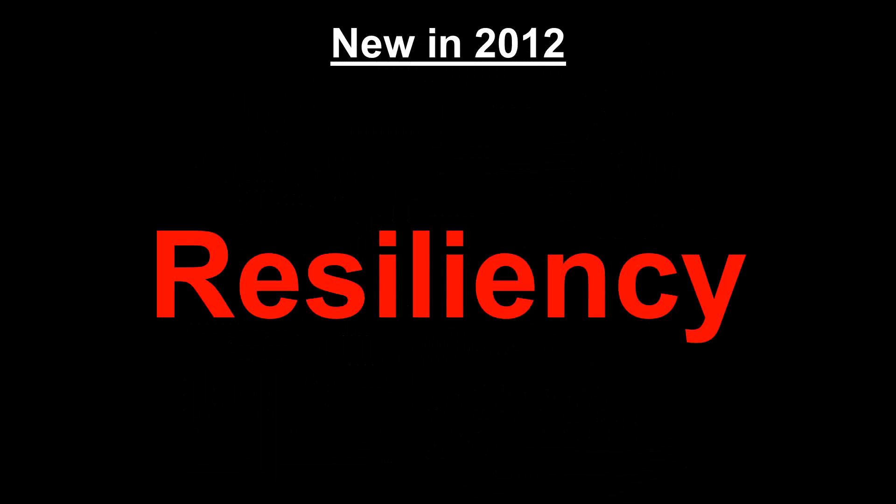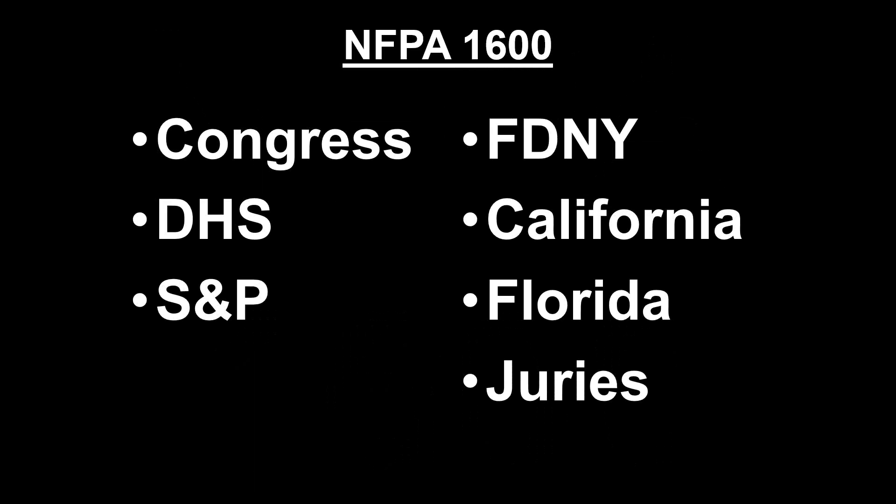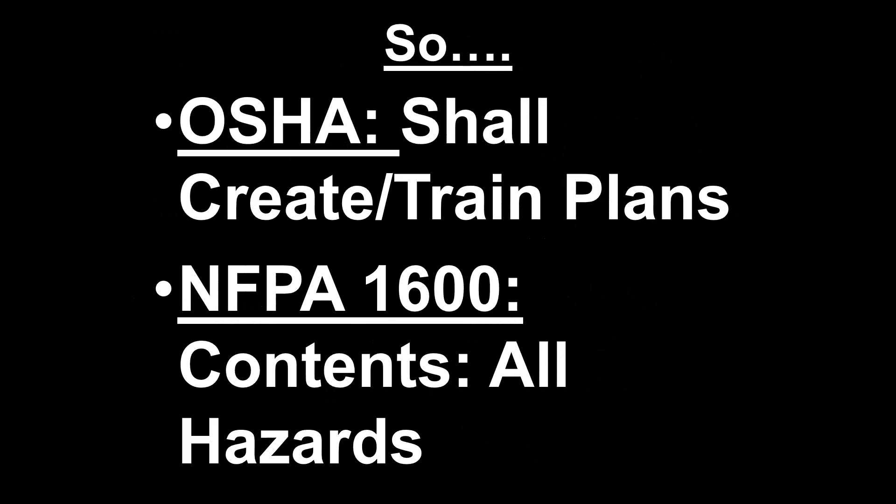Standard & Poor's went through a six-year period incorporating into their credit audits an examination of your emergency management, disaster recovery, and business continuity plans — because they are interested in resiliency: how quickly after an emergency can you come back to paying employees and bills? All of these authoritative, long-standing groups — OSHA, Congress, DHS, Florida, California, FDNY, and S&P — have designated NFPA 1600 as the standard to which you shall comply.